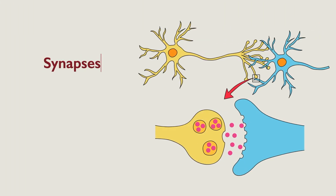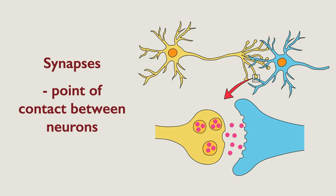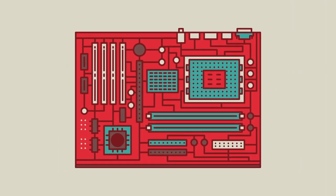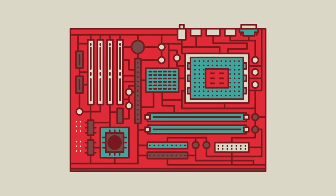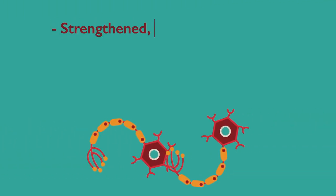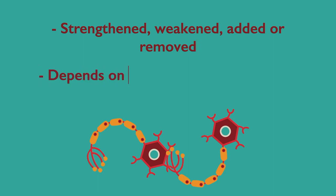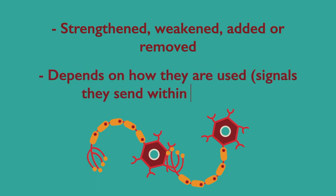Synapses are the point of contact between neurons. Imagine them as the connectors of your brain, like the connectors of a motherboard in a computer. They can be strengthened or weakened, added or removed, depending on the signals that the brain receives.